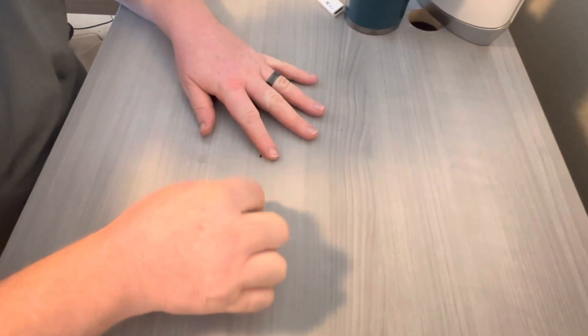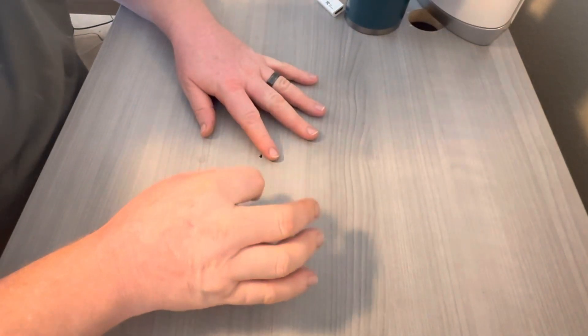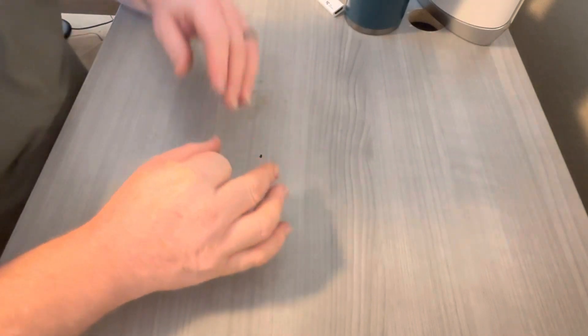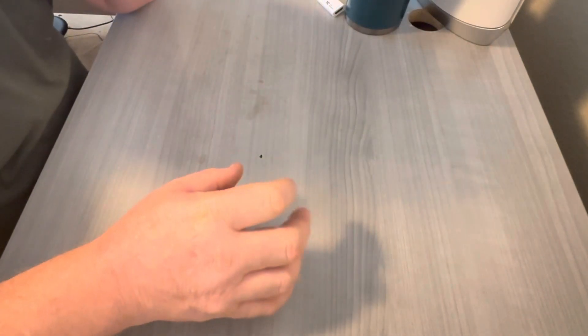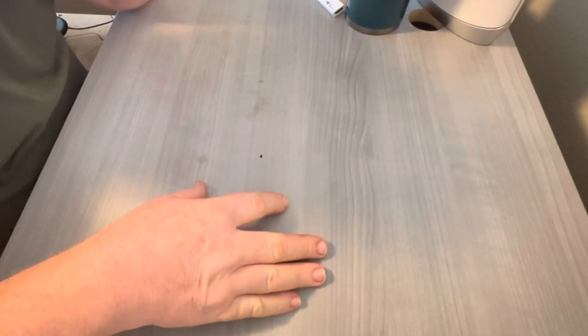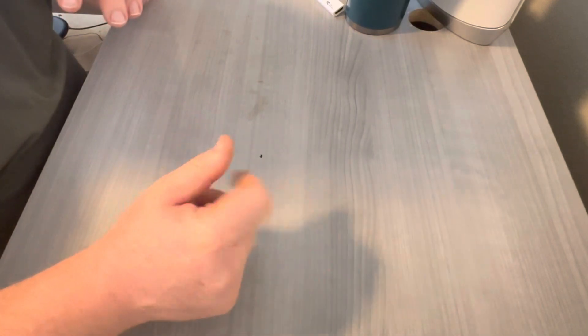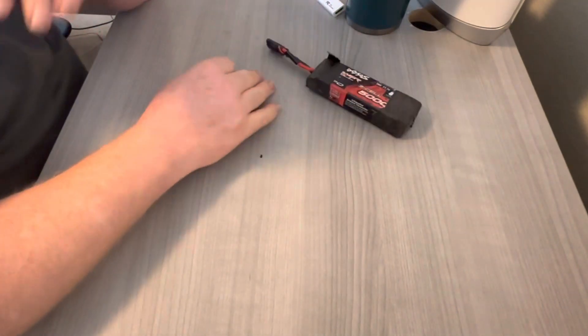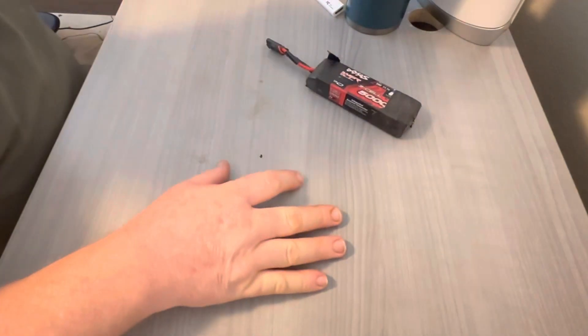A couple of guys have been asking me lately how to run an 8.4 volt servo off of a Traxxas receiver or how to run the two together. A lot of guys say you can do it. You can do it.